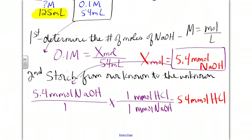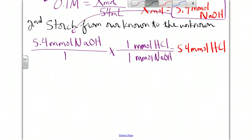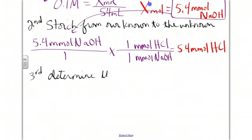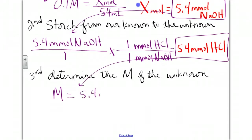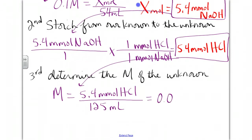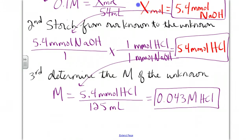The last step uses the 125 milliliters of hydrochloric acid to find the molarity. Step three: determine the molarity of the unknown. Molarity equals 5.4 millimoles of hydrochloric acid divided by 125 milliliters. When we divide these, we get 0.043 molar hydrochloric acid as our final answer.